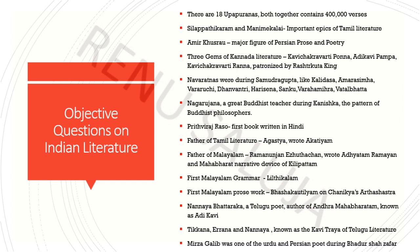Nagarjuna एक great Buddhist teacher रहे हैं Kanishka के time पर, and a prominent Buddhist philosopher। Kanishka Buddhism को बहुत follow करते थे और उन्होंने उस religion को spread करने के लिए बहुत कुछ किया। Prithviraj Raso हमारी पहली book है जो कि Hindi में लिखी गई थी। Father of Tamil Literature अगस्तय को बोला जाता है, उन्होंने Agattiyam लिखा था। Father of Malayalam — Ramanunjan H.O. Thachhan को बोला गया है, उन्होंने Ramayanam और Mahabharatam को narrative device of Kilippattu में लिखा। Kilippattu का मतलब होता है The Song by the Bird। Nannaya Bhatta Telugu के poet रहे हैं, इन्होंने Andhra Mahabharata लिखी और इनको Adikavi का नाम दिया गया। Tikkana, Errana and Nannaya are known as the Kavitrayam of Telugu literature.